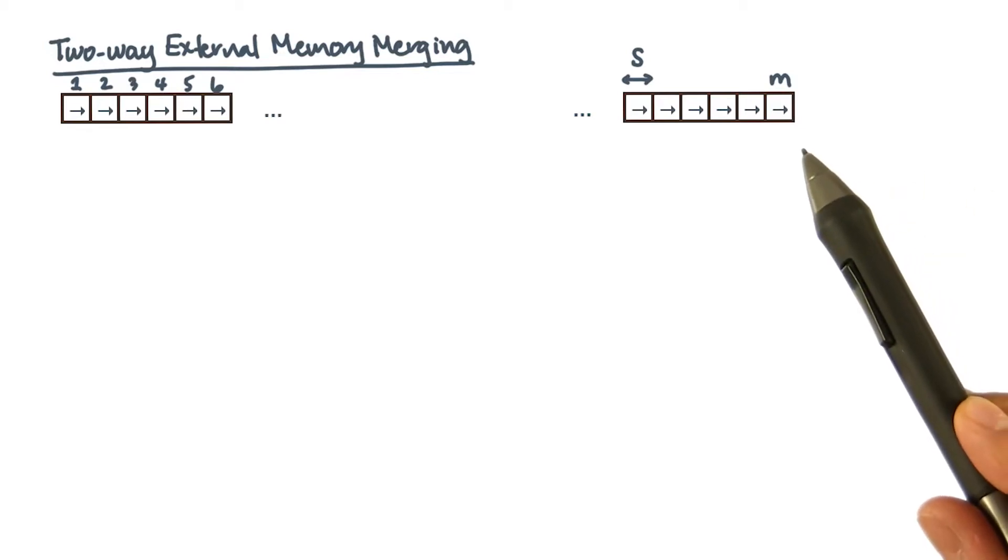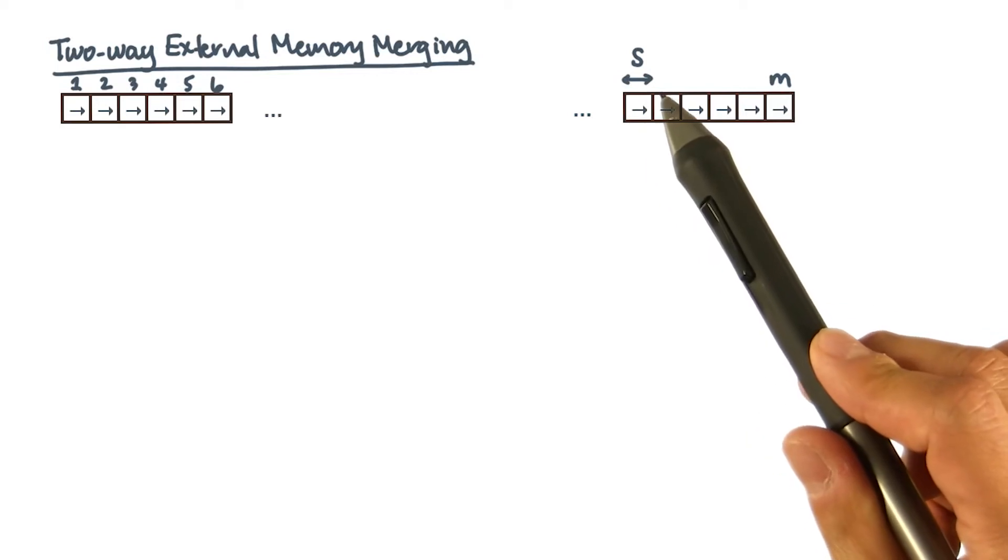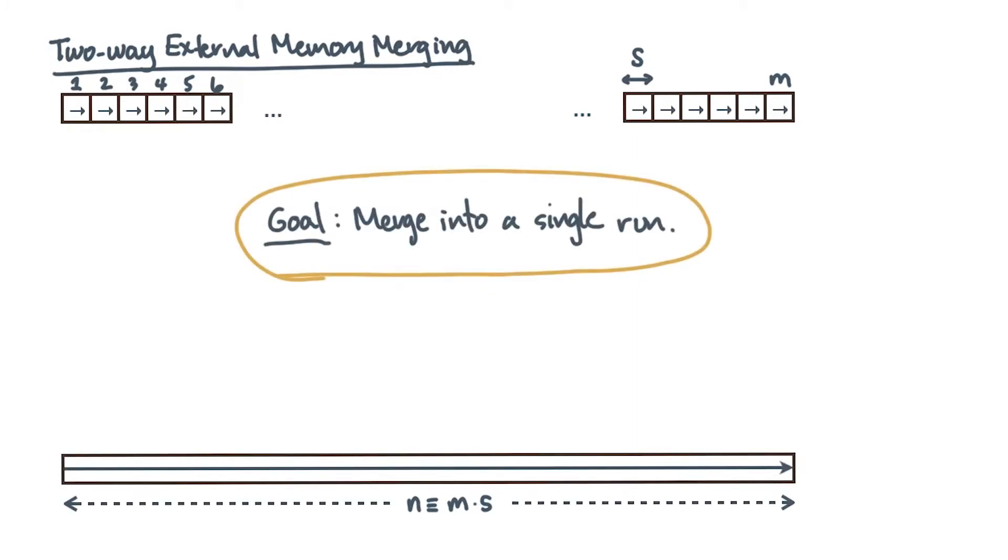Suppose you have m sorted runs in slow memory, where each run is of size s items. The total number of items is n = m × s. Your task is to merge all of these sorted runs into a single sorted run, which would complete the merge sort algorithm.